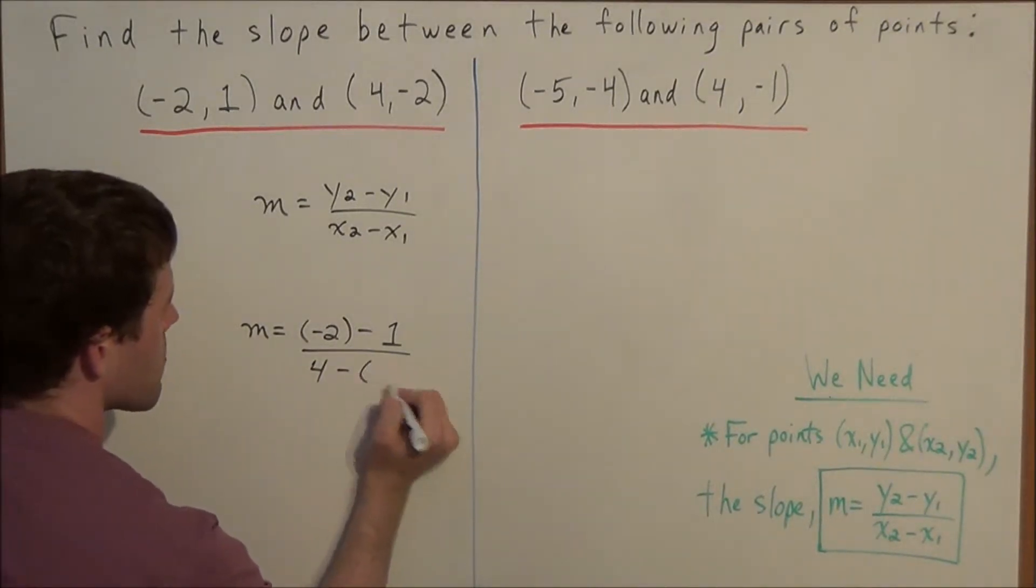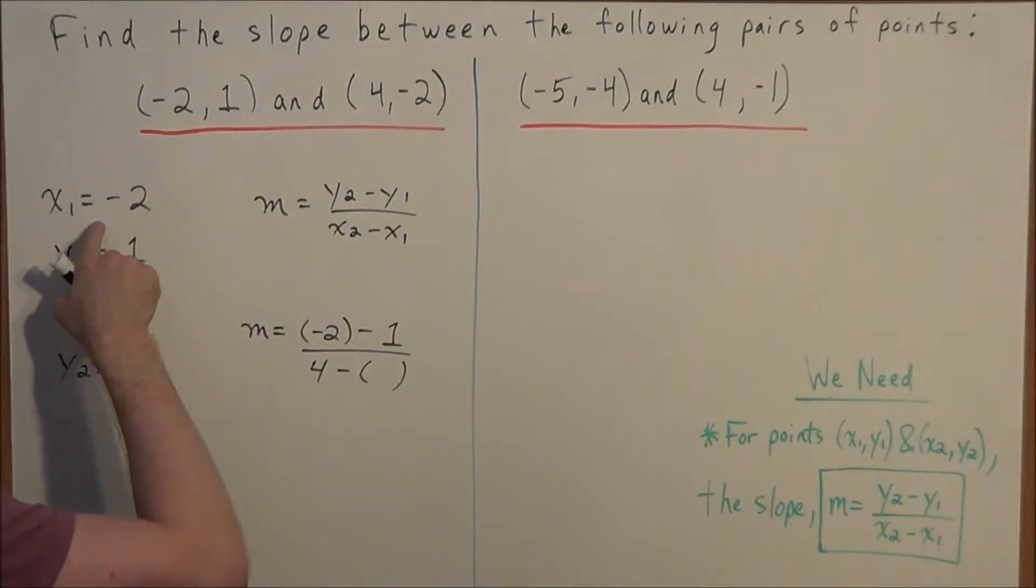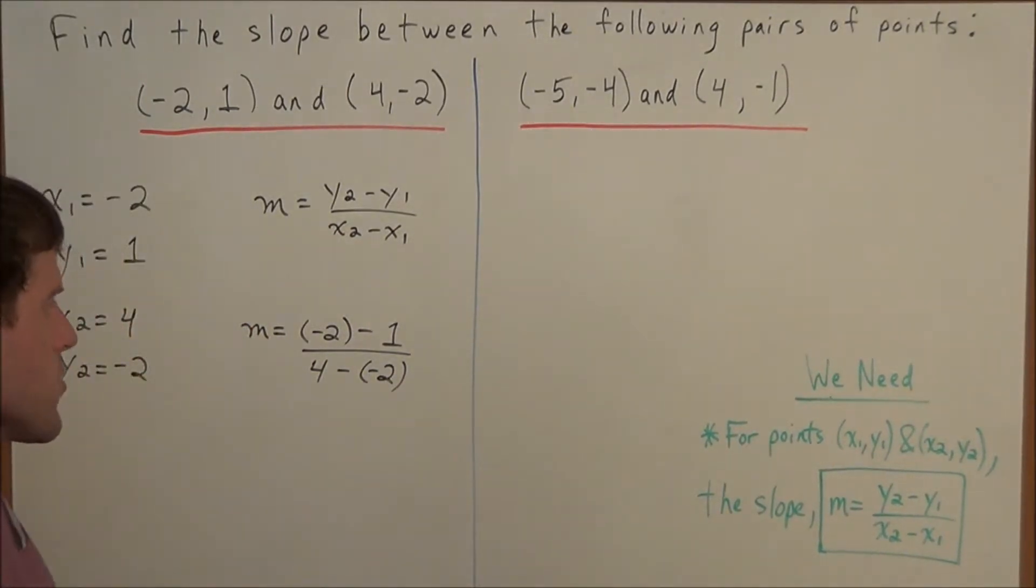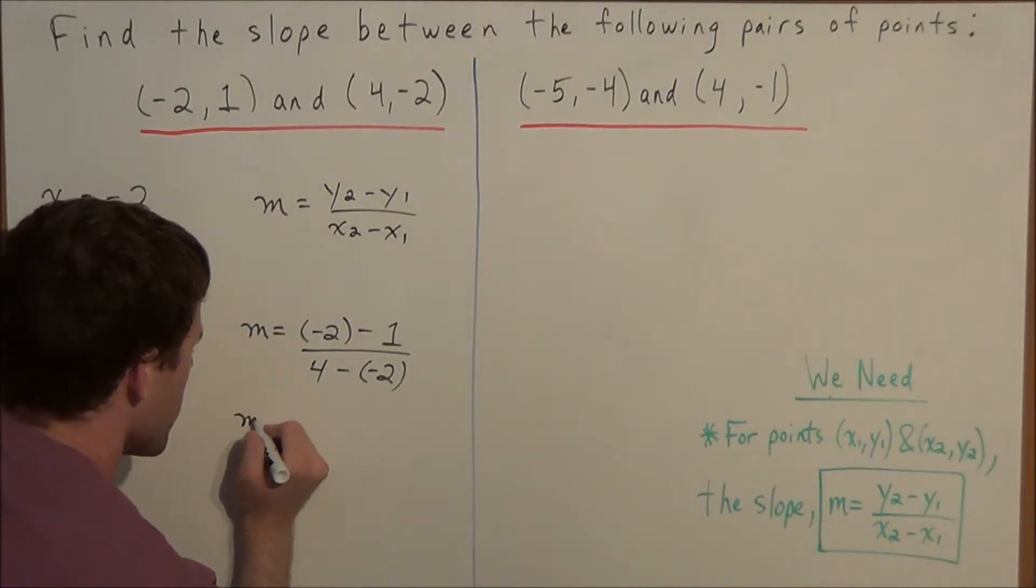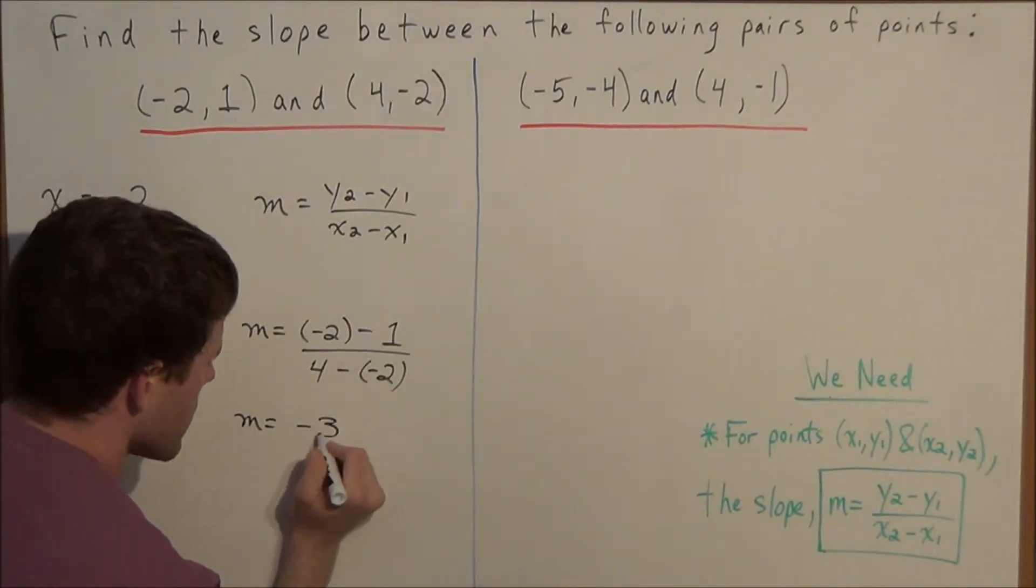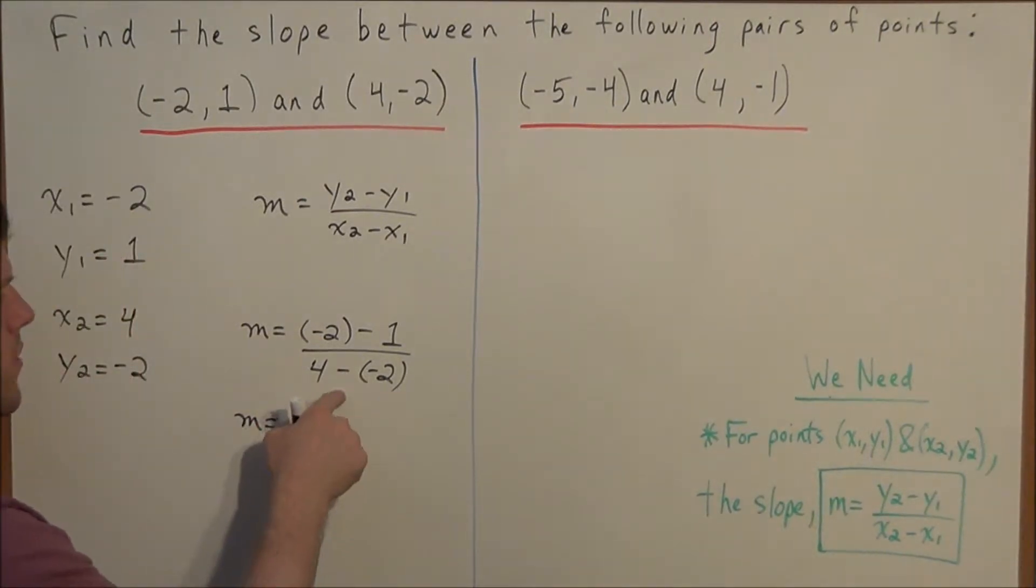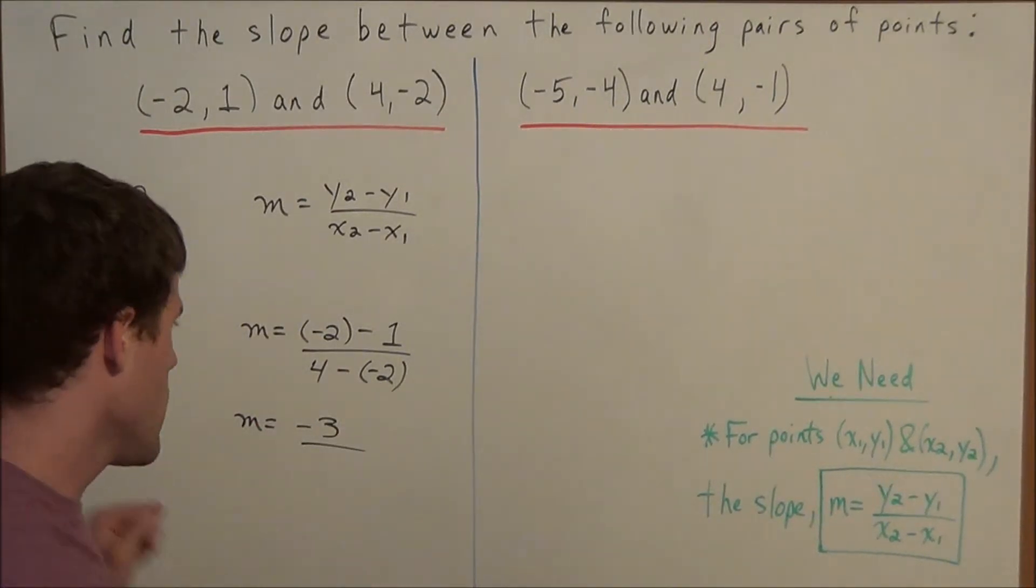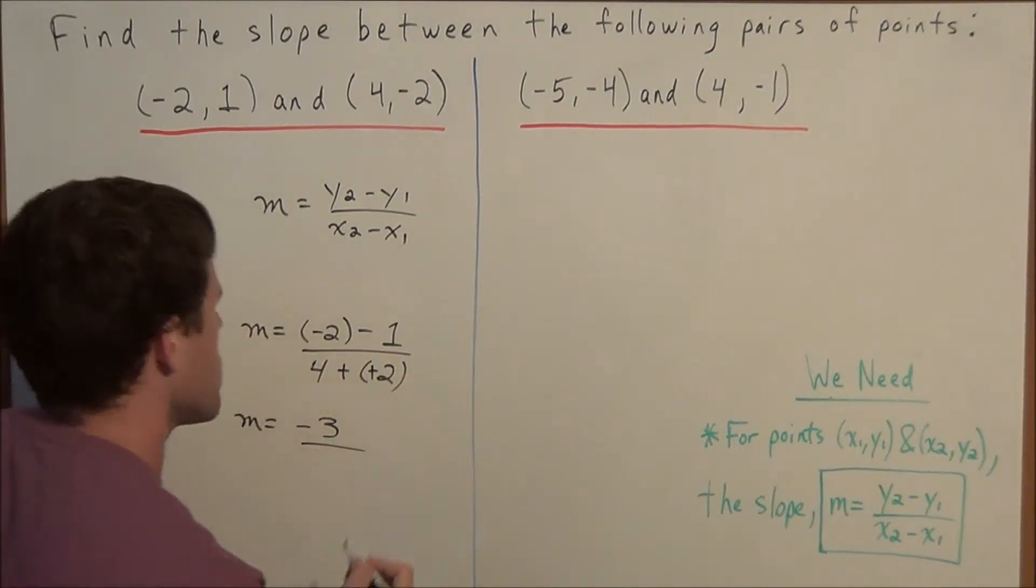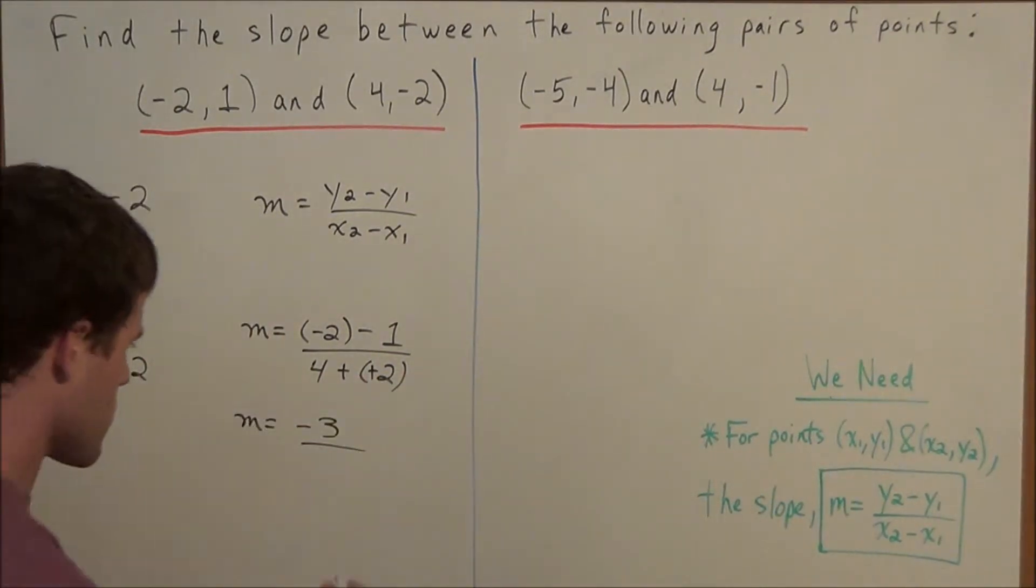So we have minus x1, but be careful here because it's minus a negative two, so just make sure that you have both of those negatives accounted for. So now the next step will be to simplify. We have m equals, and now negative two minus one is negative three, and in the denominator we have four minus a negative two. Well we have minus a negative number, so we're going to turn this into an addition problem, and now we have four plus two is six.